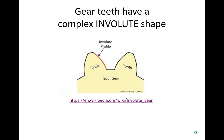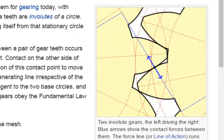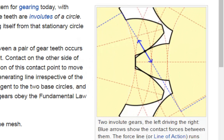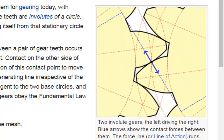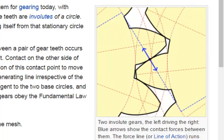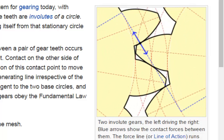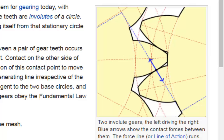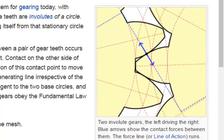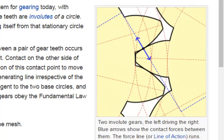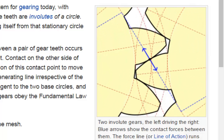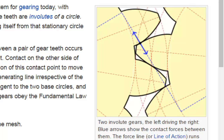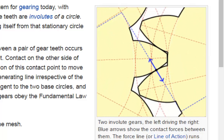The tooth of a typical spur gear has a very complex shape called an involute. Here is a graphic simulation from Wikipedia demonstrating why this involute shape is so important. You will notice that the involute shape results in an unchanging line of action of force between the gear teeth — the angle of this line of action is called the pressure angle. The involute shape also allows the meshing gear teeth to always be in rolling contact with no sliding, resulting in a very efficient way of transmitting power with very little energy loss.